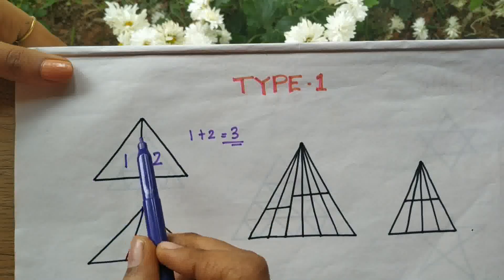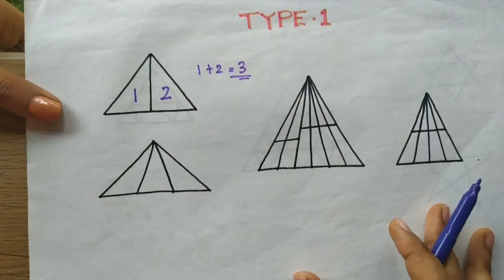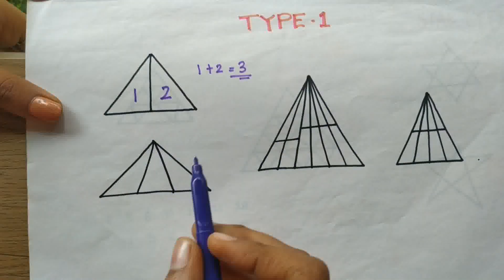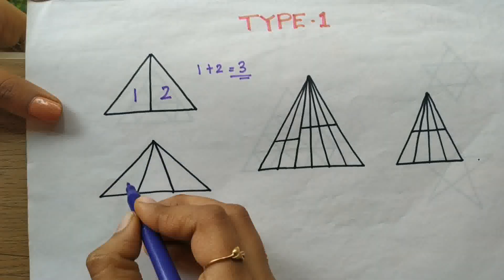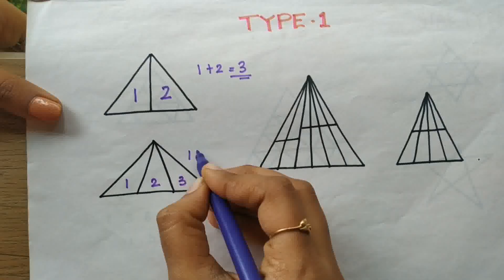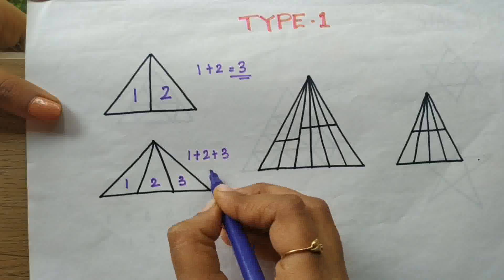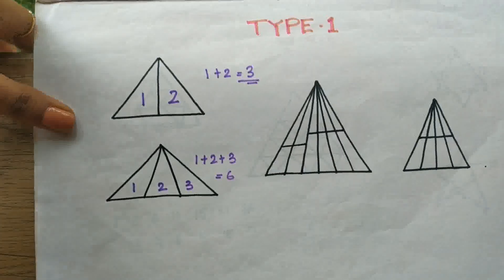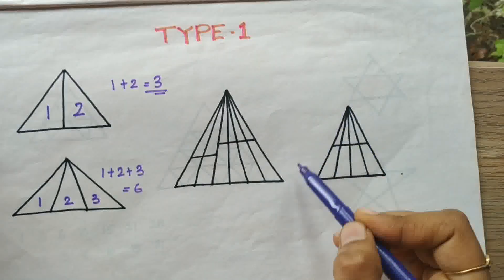Since this is very small and easy, we can find it by counting. But what if it is larger? Let's try this type of sum. Here we have one, two, and three, so one plus two plus three equals six. Six is the answer for this particular figure.